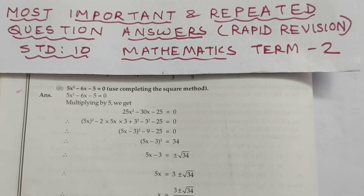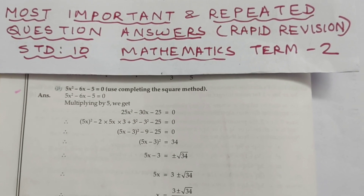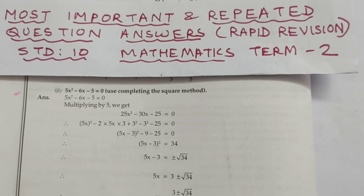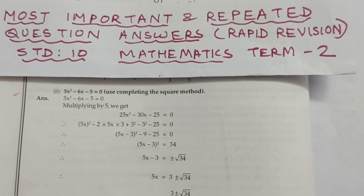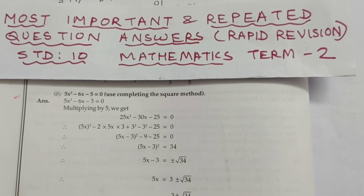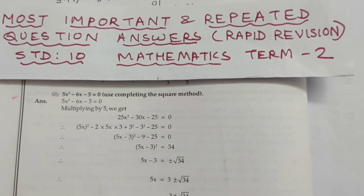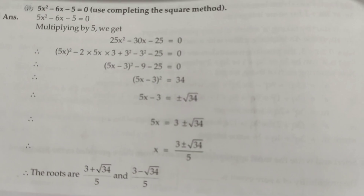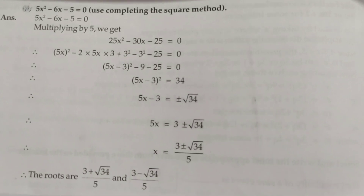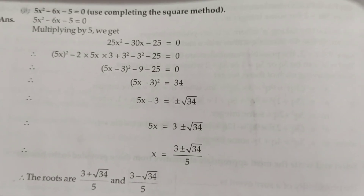Hey students, welcome to Excel Tuition. This is Part 2 of the video on most important and repeated question answers — rapid revision for Standard 10, subject Mathematics. Let us start with: 5x² - 6x - 5 = 0, use the completing the square method.